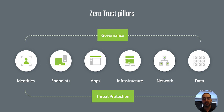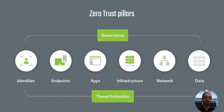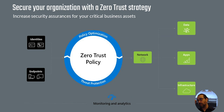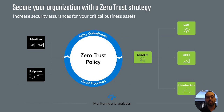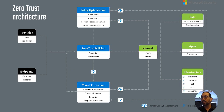Network controls provide critical in-pipe mechanisms to enhance visibility and help prevent attackers from moving laterally, assuming network segmentation is in place. Data is ultimately what we're focused on protecting — where possible, we want data to remain safe even if it leaves our applications, devices, or networks. Data should be classified, labeled, encrypted, and access restricted based on those attributes. Each element serves as a signal and a control plane for enforcement.